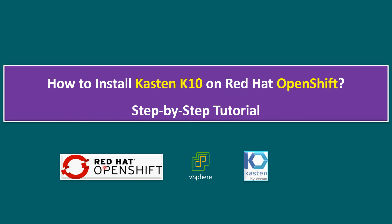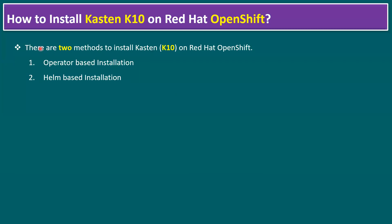Within our demo environment we have Red Hat OpenShift running on vSphere. Now we are going to install Kasten, which is acquired by Veeam. There are two methods to install Kasten on Red Hat OpenShift: the first method is operator-based installation, and the second method is Helm-based installation. We can use either method.